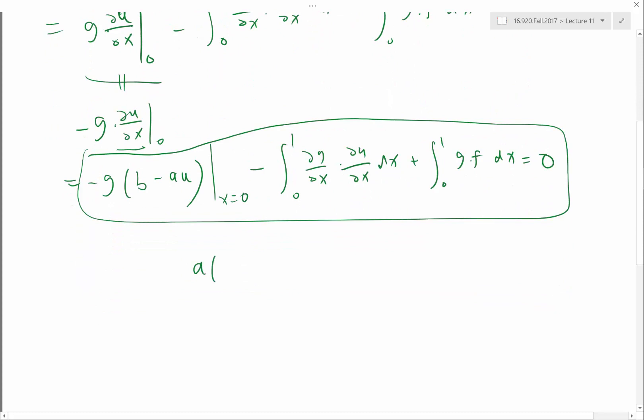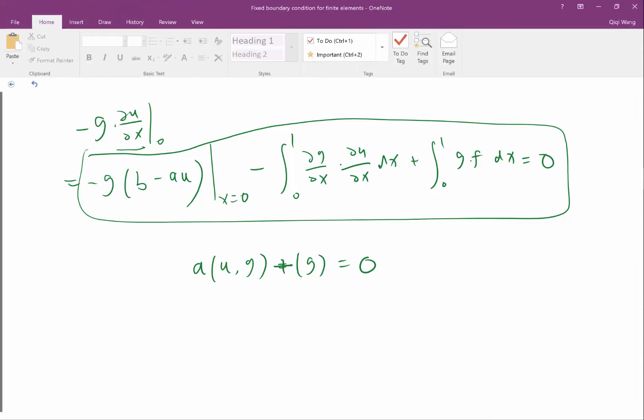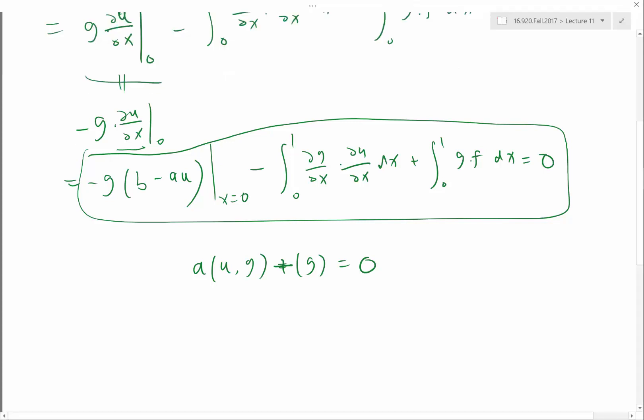Now if I want to write it in terms of a bilinear form and the linear functional equal to 0, can somebody help me identify: does the boundary condition change the weak form? Yes. Does it change the linear functional? Does it change the bilinear form? Yes. It changes everything.